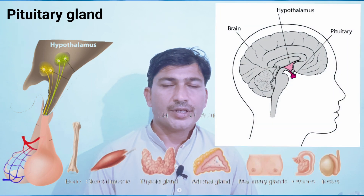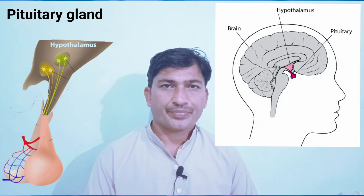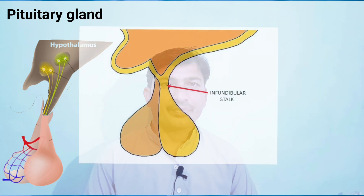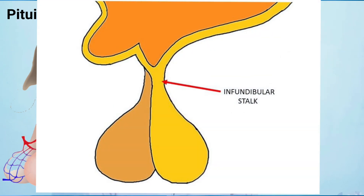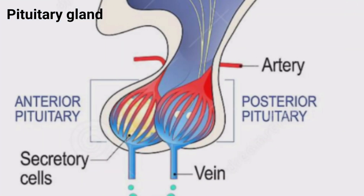The pituitary gland is located in the head region, just below the hypothalamus. It is hanging on a stalk, and the stalk of the pituitary gland is called the infundibulum.